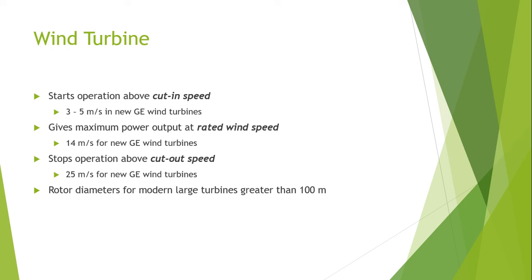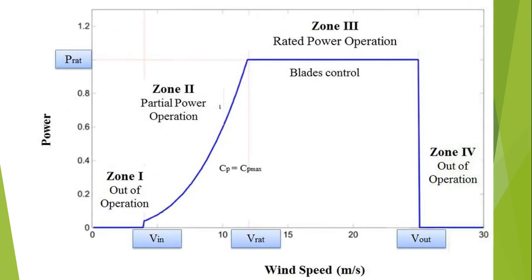The rotor diameters for regular modern large wind turbines are greater than 100 meters. Wind turbine operation is illustrated by a graph divided into 4 zones. In zones 1 and 4, the wind turbine is not likely to operate. However, in zone 2, the wind turbine operates under automatic control action, which obtains maximum conversion of kinetic energy present in the wind into electricity.